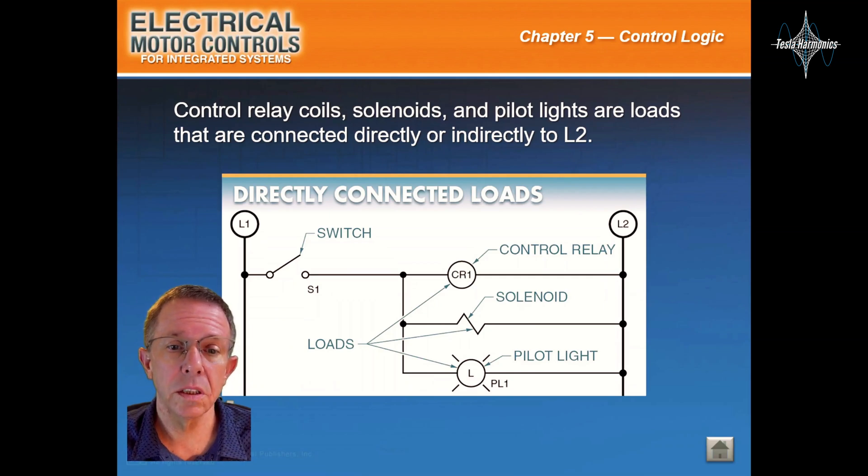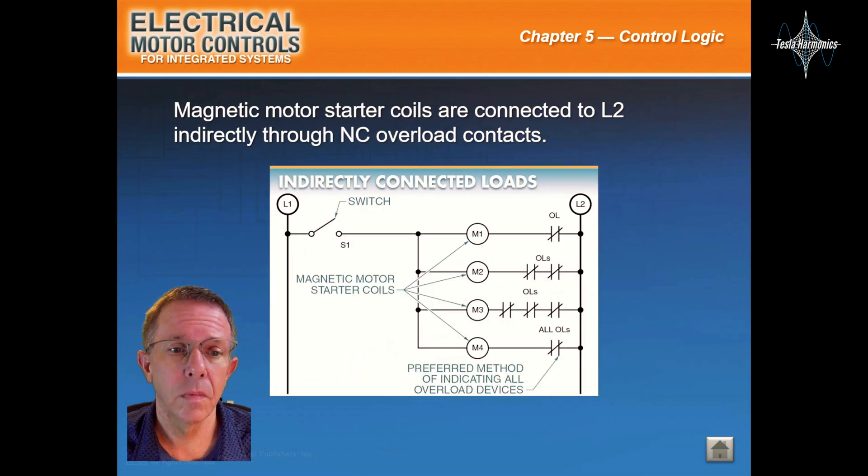Control relay coils, solenoids, and pilot lights are loads that are connected directly or indirectly to line 2. Magnetic motor starter coils are connected to line 2 indirectly through normally closed overload contacts.